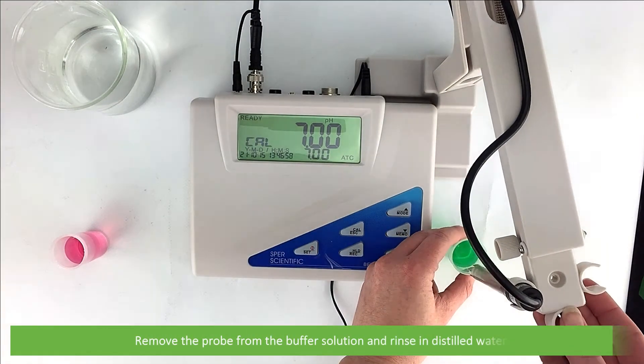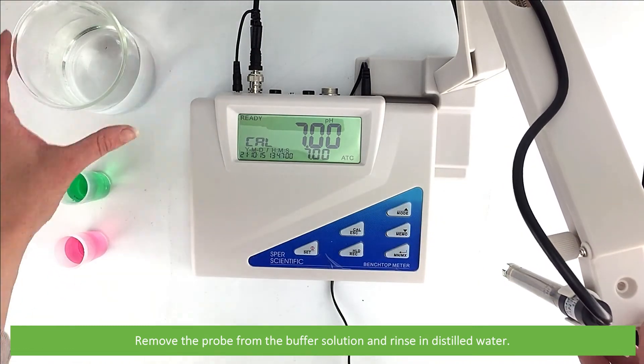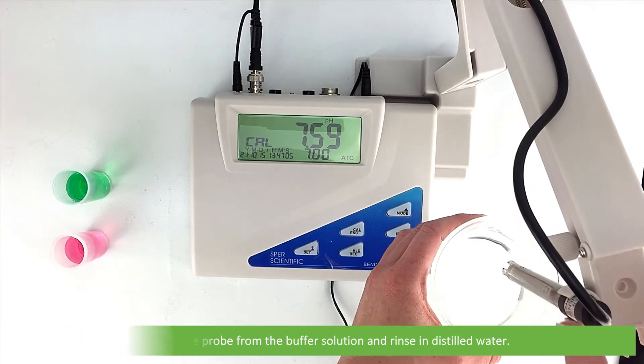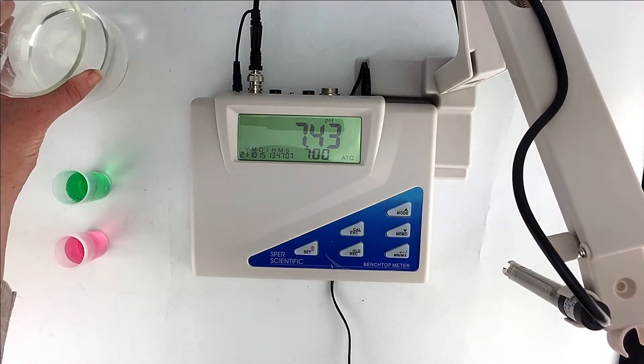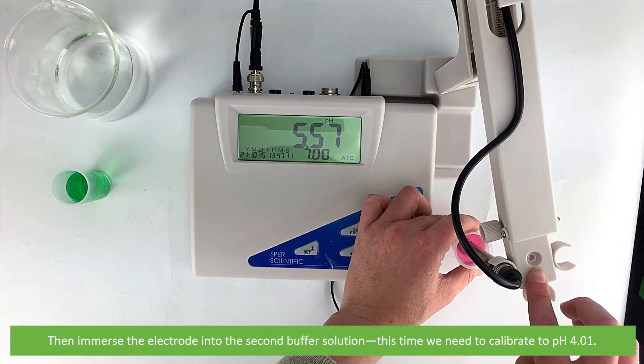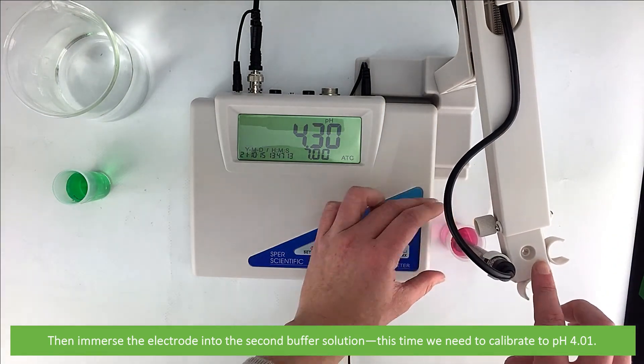Remove the probe from the buffer solution and rinse in distilled water. Then, immerse the electrode into the second buffer solution. This time, we will need to calibrate to pH 4.01.